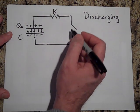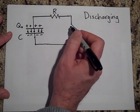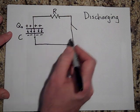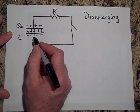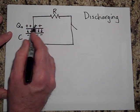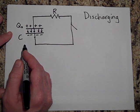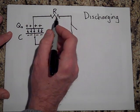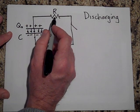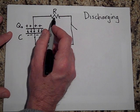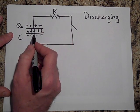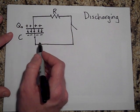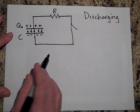When I close this switch, these electrons are going to zip on over and neutralize these positive charges. They will zip through here, but the resistor is going to resist them doing that too fast. The bigger this resistor is, the longer it's going to take for this to neutralize.